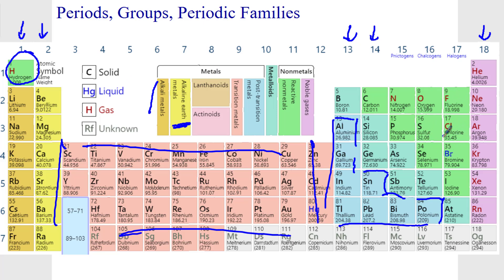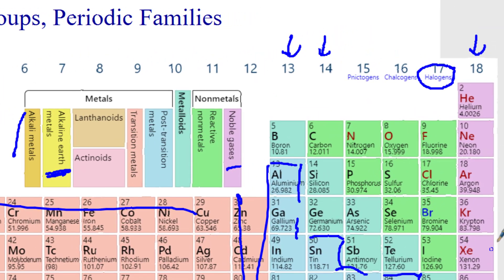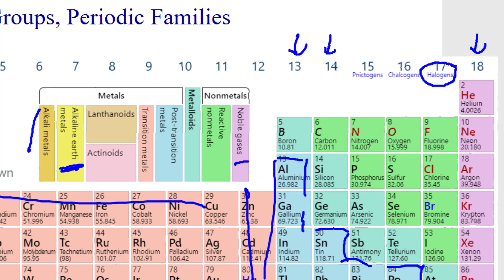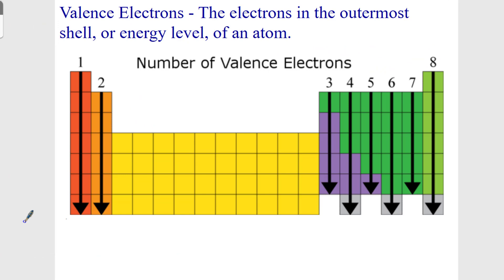You can see we have what we call the fluorine family, or what we would call the halogens. The halogens are Group 17. They end in S2P5, and they tend to gain one electron or share electrons. Group 18 is called the noble gases. These elements do not tend to react with other elements. They have fully filled electron configurations — S2P6 — giving them eight valence electrons, totally filled.